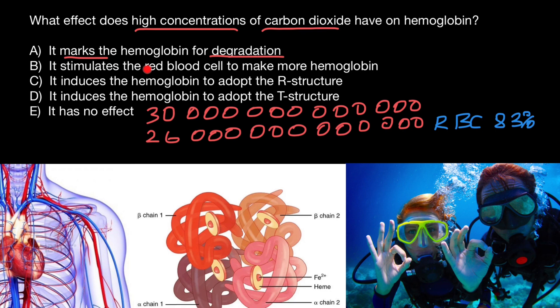Now let's move to variant B: it stimulates the red blood cell to make more hemoglobin. What is also interesting about red blood cells is that they don't have a nucleus. Can you imagine that 83% of our cells have no nucleus? The average life expectancy of red blood cells is 120 days. At the early stage in bone marrow they do have a nucleus, but before being released into the bloodstream they are denucleated.